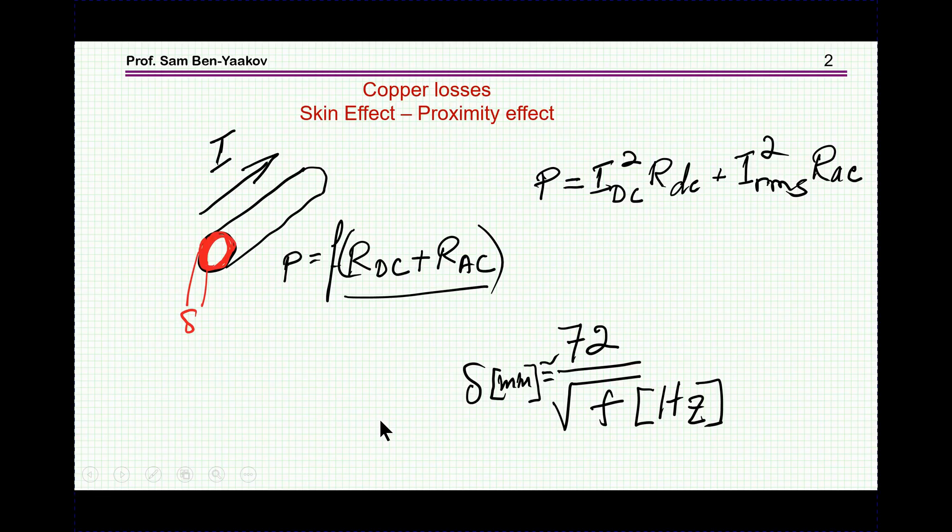Copper losses are due to the resistance of the wire. If we have a wire, there's a current flowing in it, there's going to be some conduction losses, but the losses are a function of frequency because at high frequency there is a skin effect.